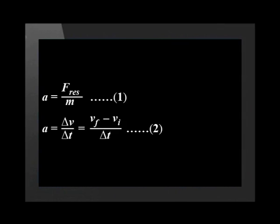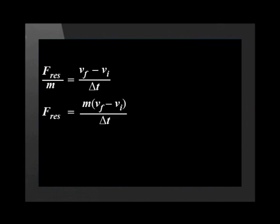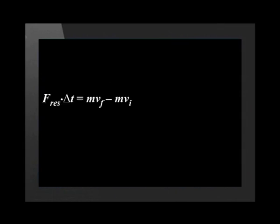Note that resultant force is the same as net force. We equate these and find that the resultant force equals mass times (final velocity minus initial velocity) divided by change in time. This equals mass times final velocity minus mass times initial velocity divided by change in time. Now rearrange and we find that resultant force times change in time equals mass times final velocity minus mass times initial velocity.